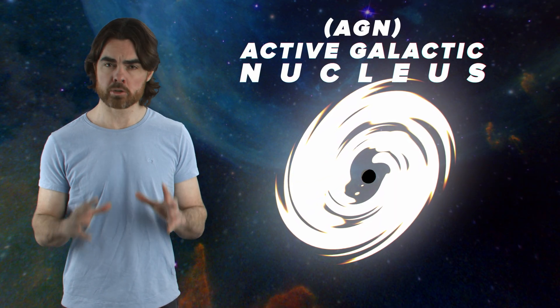So, when a supermassive black hole feeds and blasts energy into the universe, what we see depends on its orientation, whether or not it has a jet, the power of the accretion disk, and a few other properties besides. However, the family name for any type of accreting supermassive black hole is active galactic nucleus.